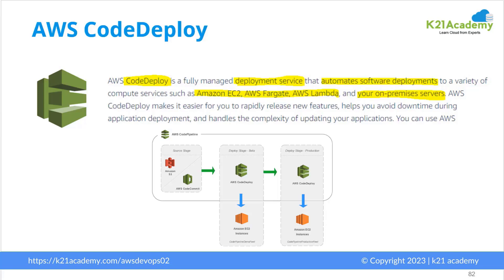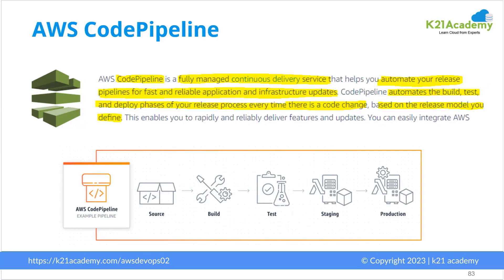With CodeDeploy you can deploy to a staging environment on EC2 or to a production environment. You can automate all of this using CodePipeline. CodePipeline picks up code from the source repository, builds it, and then deploys it using CodeDeploy. As shown in the diagram, it picks up files from source, builds them, tests them, deploys them on a server, and once testing is complete you can automate deployment to production as well.